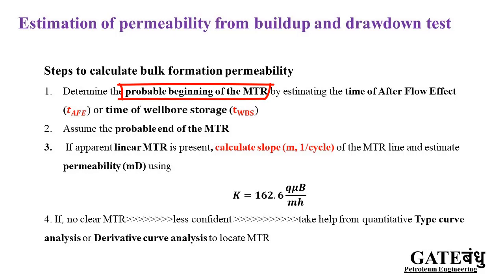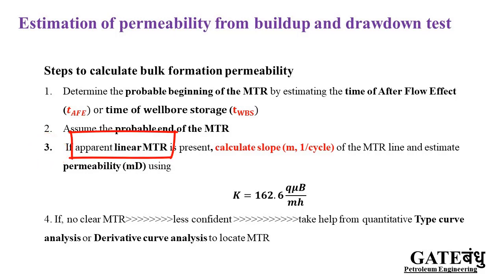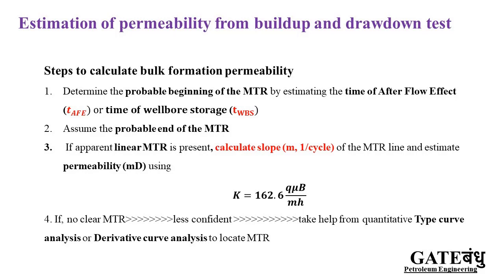When you estimate the probable beginning of the MTR, the second step is to find the probable end of the MTR, which can be assumed when there is a deviation from the straight line in the Horner plot. Third, if we get this apparent linear MTR, we calculate the slope on a semi-logarithmic scale — that will be the per-cycle slope — and from that slope we can estimate the permeability.